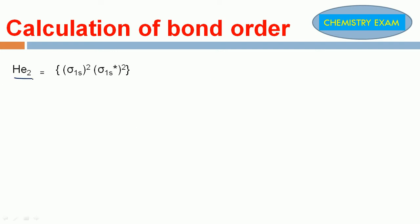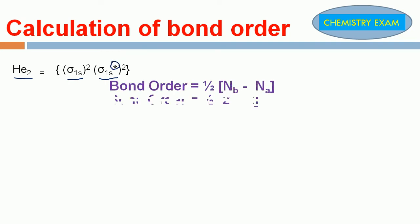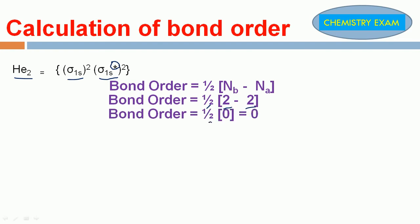Next, the helium molecule, He₂. What is the electronic configuration for this molecule? Sigma 1s², sigma star 1s². Star denotes anti-bonding electrons. Bond order: 2 bonding electrons, 2 anti-bonding electrons. So 1/2 into (2 minus 2) equals 0. The bond order for He₂ molecule is 0.